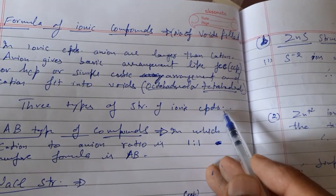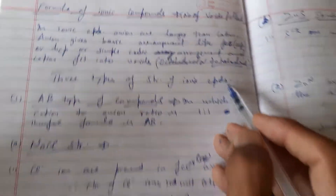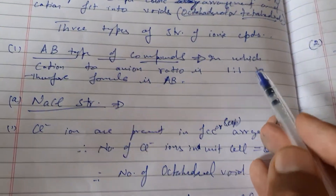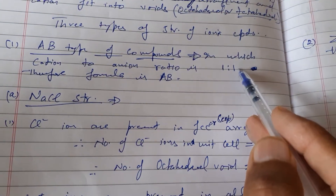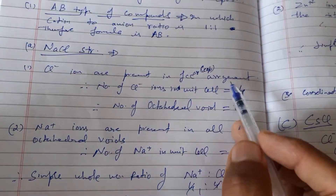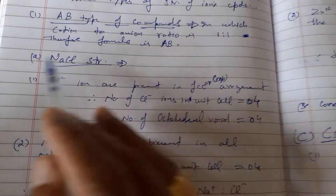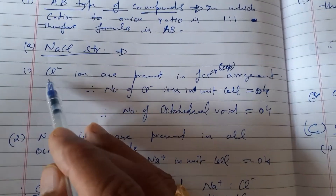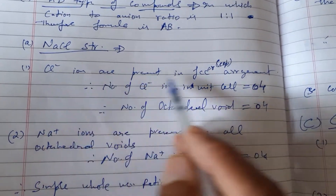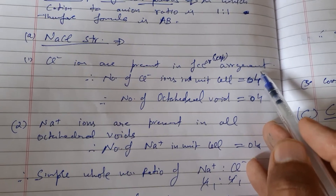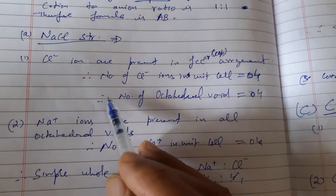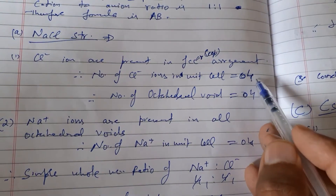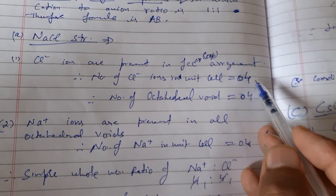According to this, there are three types of structures of ionic compounds. The first type is the AB type of compound, where the cation to anion ratio is 1:1. In the AB type, the most important structure is the sodium chloride structure. In the sodium chloride structure, chloride ions are present in FCC arrangement.